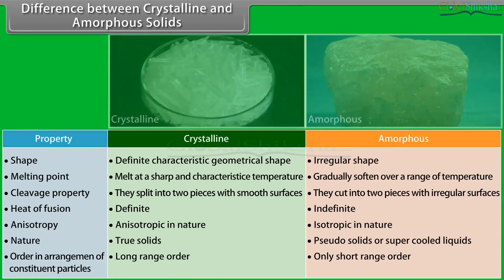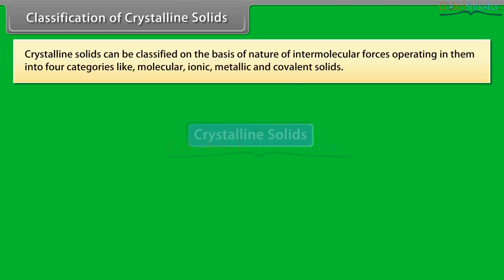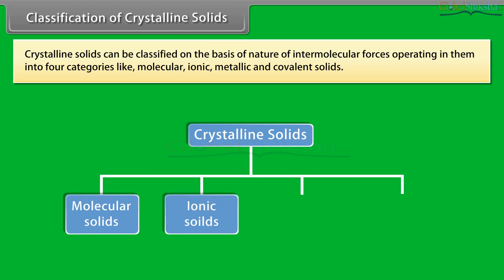Crystalline solids can be classified on the basis of nature of intermolecular forces operating in them into four categories: molecular, ionic, metallic, and covalent solids.